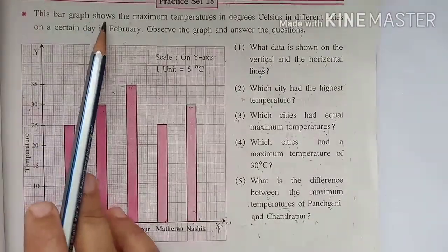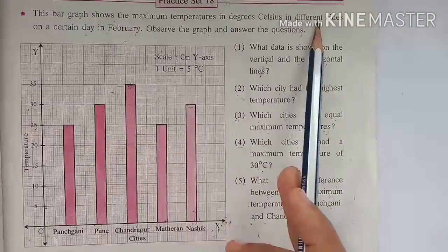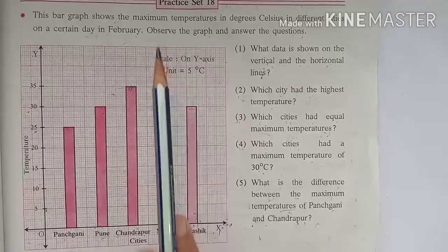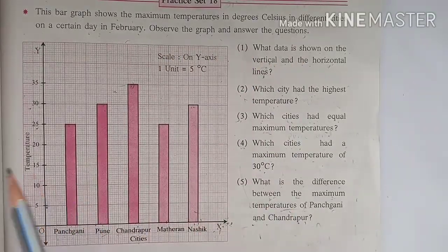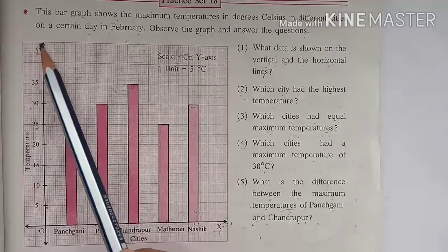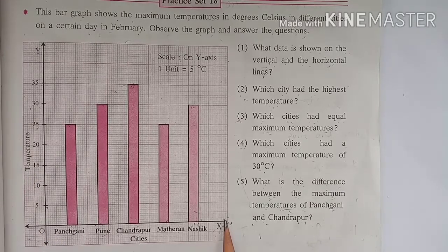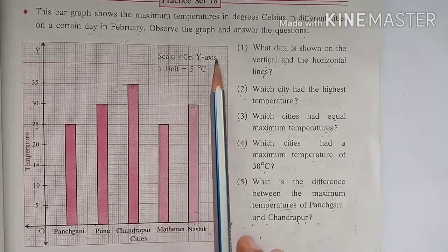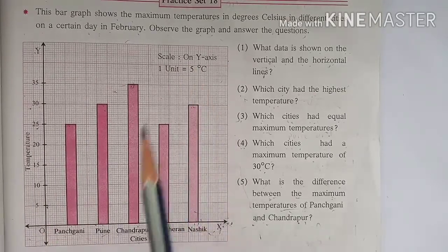This bar graph shows the maximum temperatures in degrees Celsius in different cities on a certain day in February. Observe the graph and answer the questions. On the y-axis, temperature is given. On the x-axis, names of the cities are given. Scale is given on y-axis: one unit equals 5 degrees Celsius.